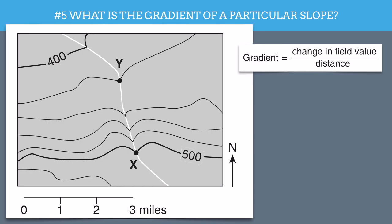Now, in this case, field value refers to the elevation. So we want to know how much does the elevation change over a given distance. So let's say we want to find the gradient between points X and Y.